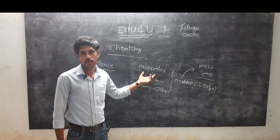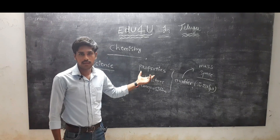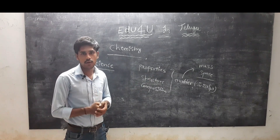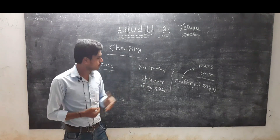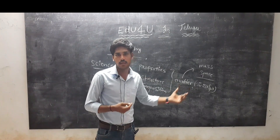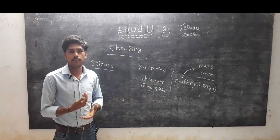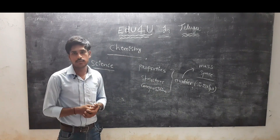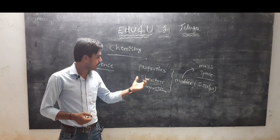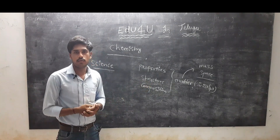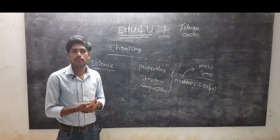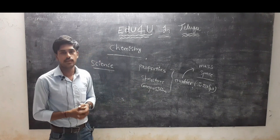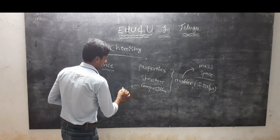First of all, what is properties? Properties means dharma. For example, we are human beings but we have different properties. Matter has different properties — physical properties, chemical properties — and we study those properties in chemistry. Structure means nirmana — different nirmana — we study in chemistry.